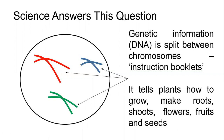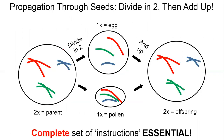You can think of chromosomes as instruction booklets, which tell the plant how to grow, make its roots, shoots, flowers, fruits and seeds. Importantly, a plant needs a complete set of these instruction booklets — one missing and the plant does not know how to properly grow or make its parts. This set of instruction booklets or chromosomes is constant for each species.